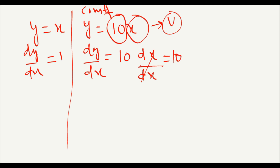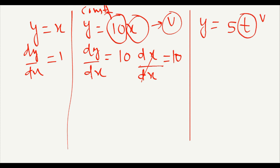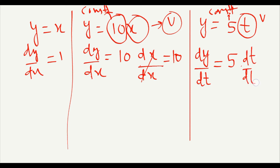Let's take another example. Suppose y equals 5t. Here t is the variable and 5 is the constant. For differentiation of y with respect to the variable t, keep the constant as it is and differentiate with respect to t, so you get dy by dt equals 5. So in this way we observe that there is always a distinction between variables and constants.